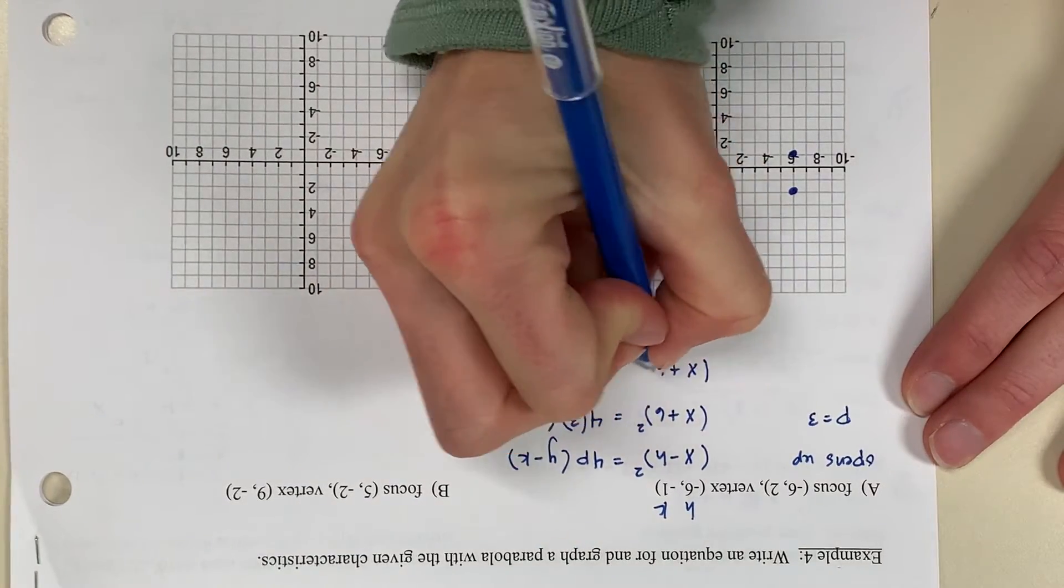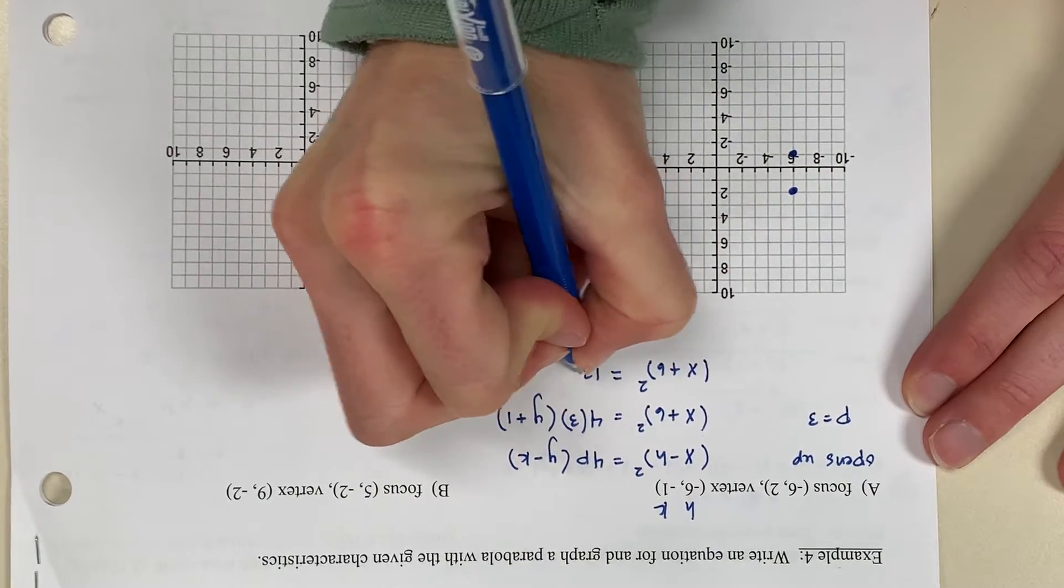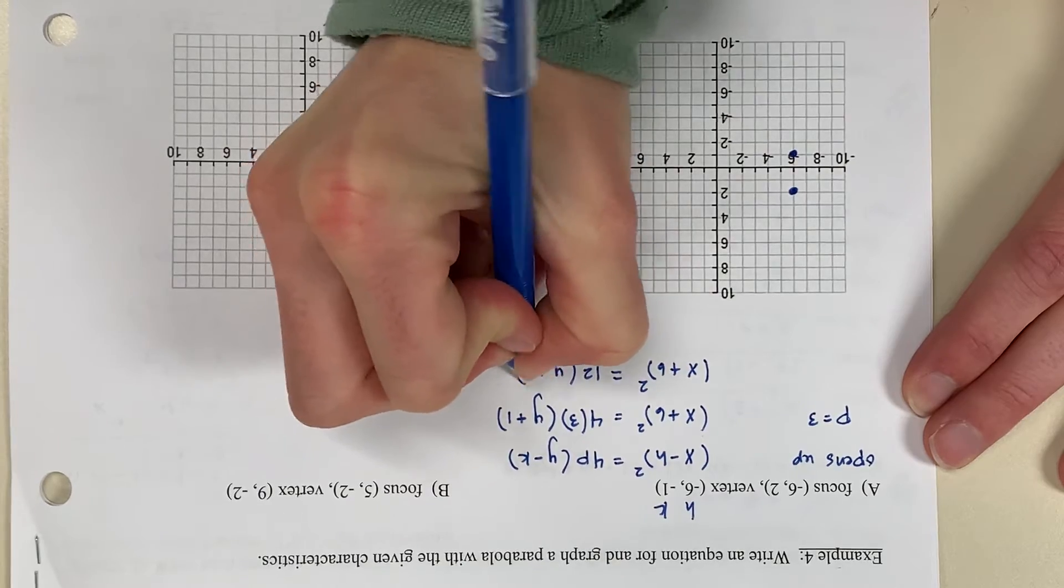Now if I simplify, I have x plus 6 quantity squared equals 12 times the quantity y plus 1.